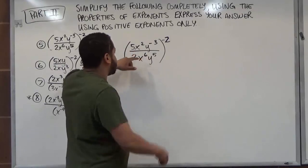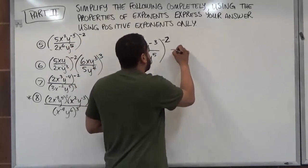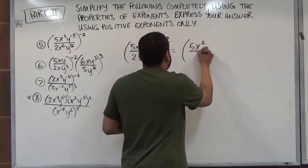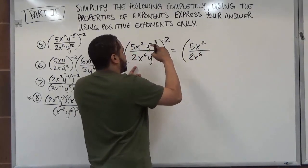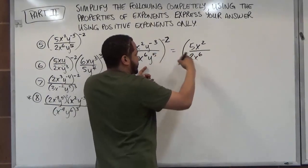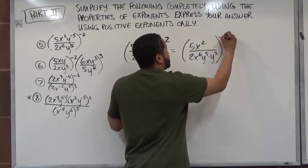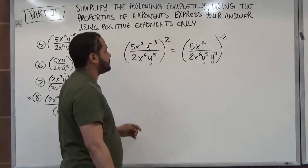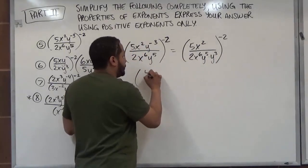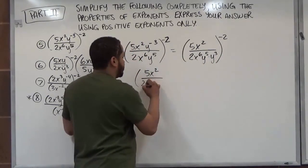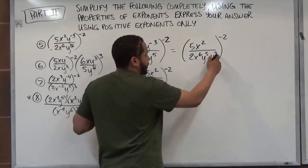Starting with the inside of the parentheses, we have a negative exponent — we want to transpose that to the denominator. So we're going to have 5x to the second power in the numerator, and in the denominator we have 2x to the sixth. The negative third power is going to come down, so we have y to the fifth times y to the third. This is all to the negative second power. The next step is to multiply these two and add the powers together. When we multiply common bases, we add the exponents.